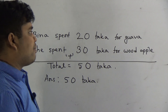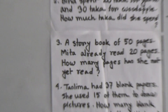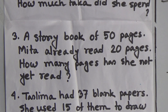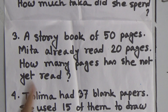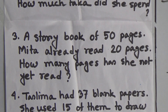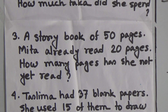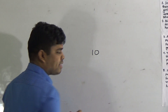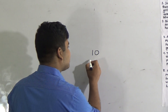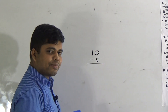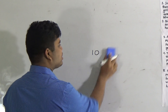Next, we shall solve question number three. First, read the question: a story book has 50 pages. Mita already read 20 pages. How many pages has she not read? Suppose you have a story book with 10 pages and you have already read 5 pages — how many pages are left? The answer is 5. Just like this, we shall solve question number three.